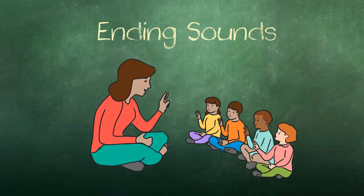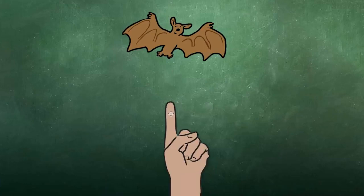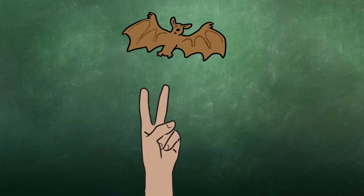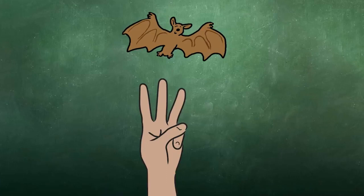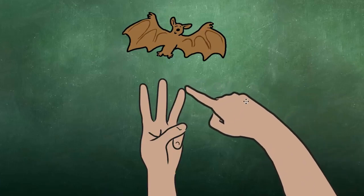Then in another lesson, I'll use the same technique for ending sounds. I would say, let's look at the word bat. Say bat. What are the sounds we hear in bat? And the students would say b-a-t. Then I would ask, what is the last sound we hear in bat? And I would point to the finger representing that sound.